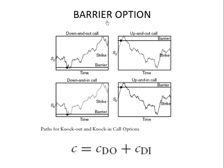The second type of options we'll study are called barrier options. In a down-and-out call option, the barrier is below the current spot price — that is why it's called 'down.' If the spot price hits this barrier on the downside, the call option extinguishes. If the barrier is not hit, then the payoff at maturity is given by S minus K, which is the payoff for any call option.